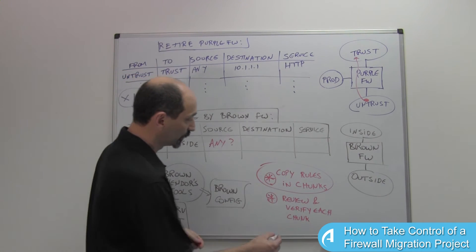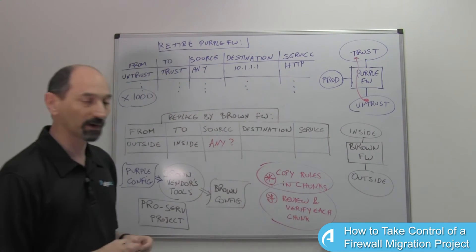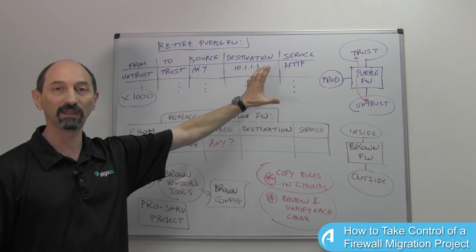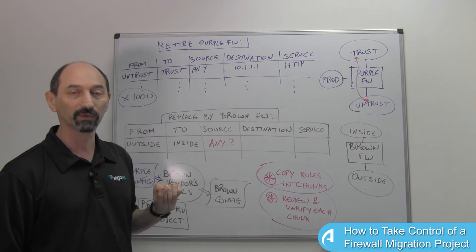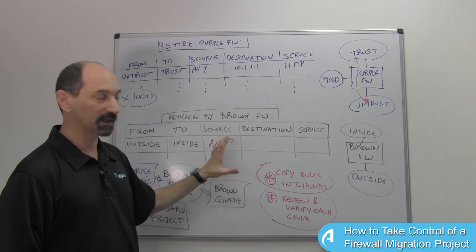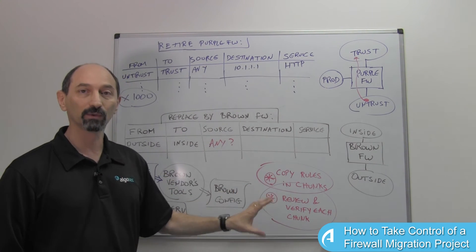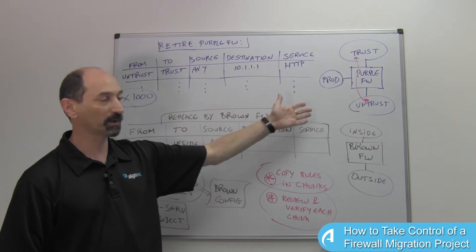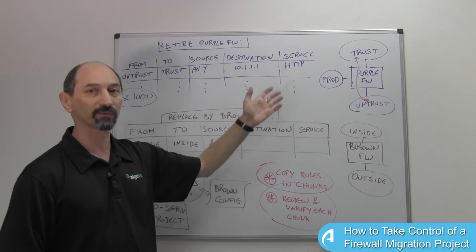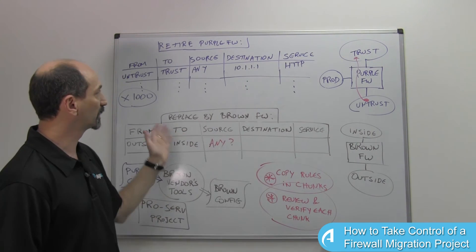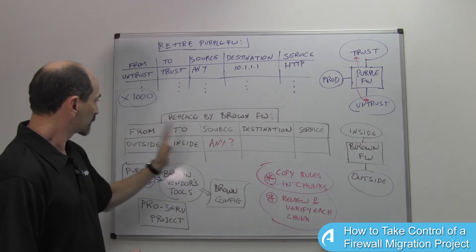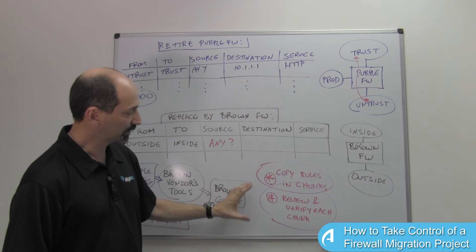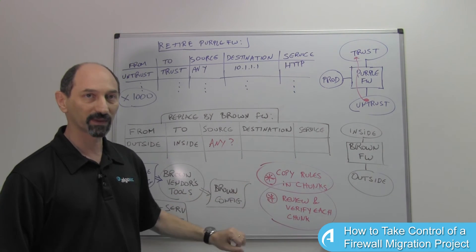After you do that, review and verify each chunk to see that the 15 rules that you've moved in today's chunk actually do in the brown environment exactly what they used to do in the purple environment — even though the topology is different, the naming is different, and the zone names are different. Functionality-wise, the copied rules still do the same thing.